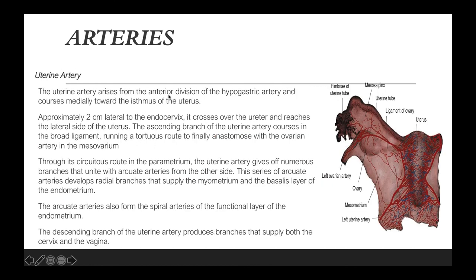The uterine artery arises from the anterior division of the hypogastric artery and courses medially towards the isthmus of the uterus. Approximately 2 cm lateral to the endocervix, it crosses over the ureter and reaches the lateral side of the uterus. The ascending branch of the uterine artery courses in the broad ligament, running a tortuous route to finally anastomose with the ovarian artery in the mesovarium. The uterine artery gives off numerous branches that unite with the arcuate arteries from the other side. These arcuate arteries develop radial branches that supply the myometrium and the basalis layer of the endometrium, and also form the spiral arteries of the functional layer. The descending branch produces branches that supply both the cervix and the vagina.